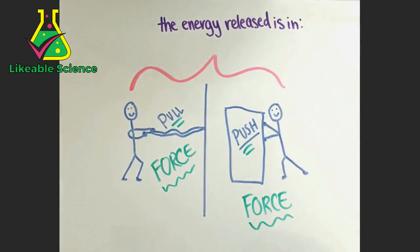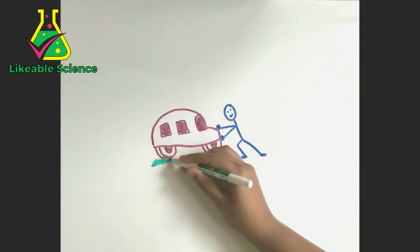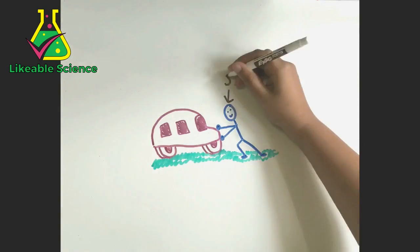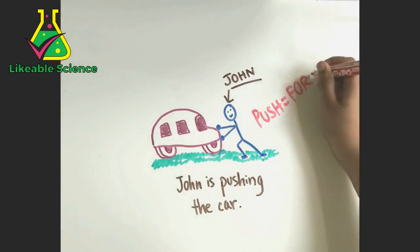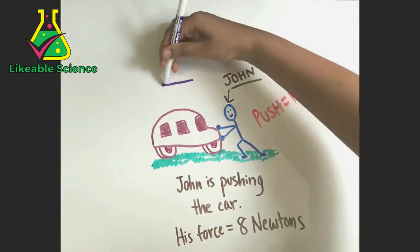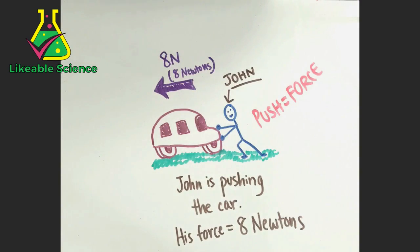Every time you push or pull an object, or use force, you're also releasing energy. And that energy is released in newtons. If a person is pushing a car, they're putting force on the car and releasing energy. This could be said as John uses a force of 8 newtons, or 8N, to push the car.